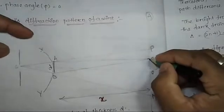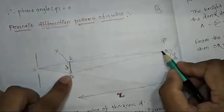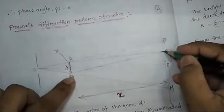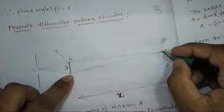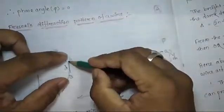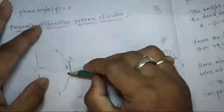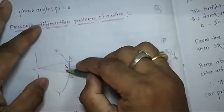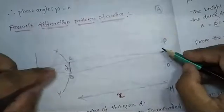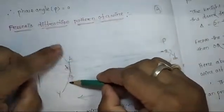At point Q, the number of half period zones obstructed in the upper and lower half of the wavefront will be different. According to Fresnel's assumption, the wavefront propagating through or by diffraction is considered to be distributed into a number of half period zones. So the above half period zones and below half period zones are considered for this wavefront.